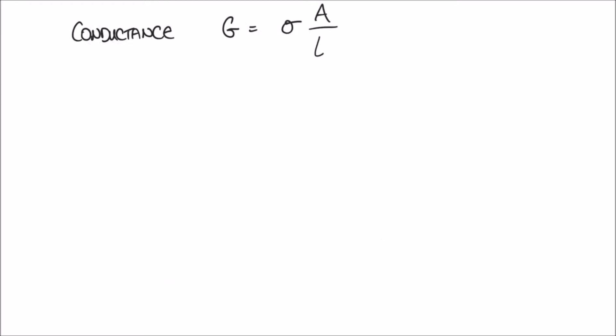Let's start with conductance. The formula for conductance is G equals sigma times A over L, where sigma is the conductivity, A is the cross-sectional area, and L is the length. We'll talk about what these terms mean using an example.